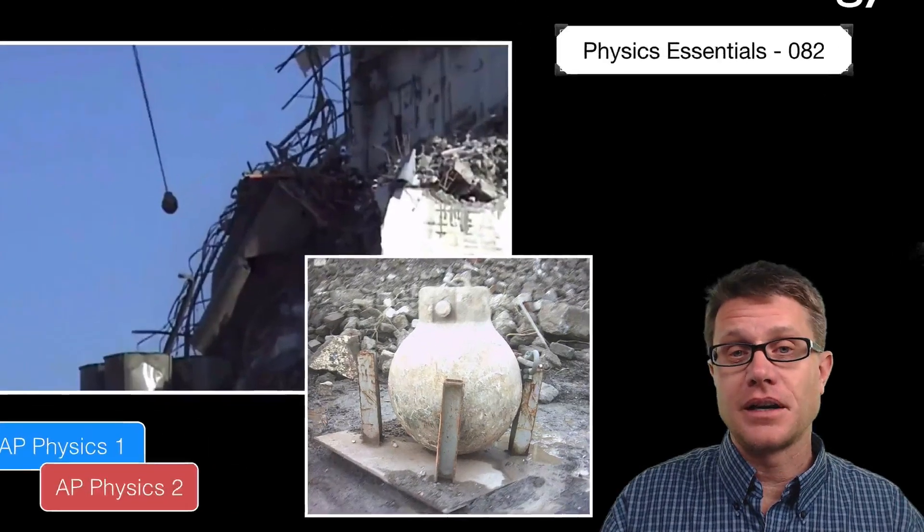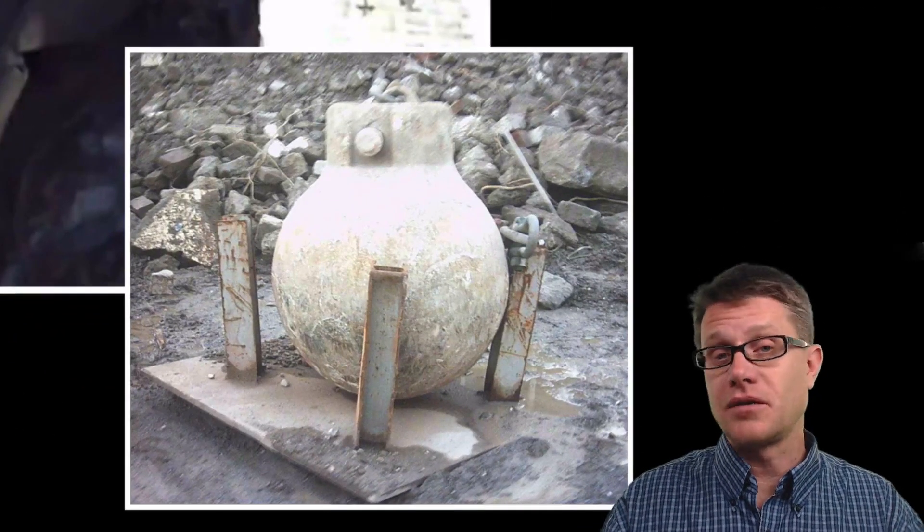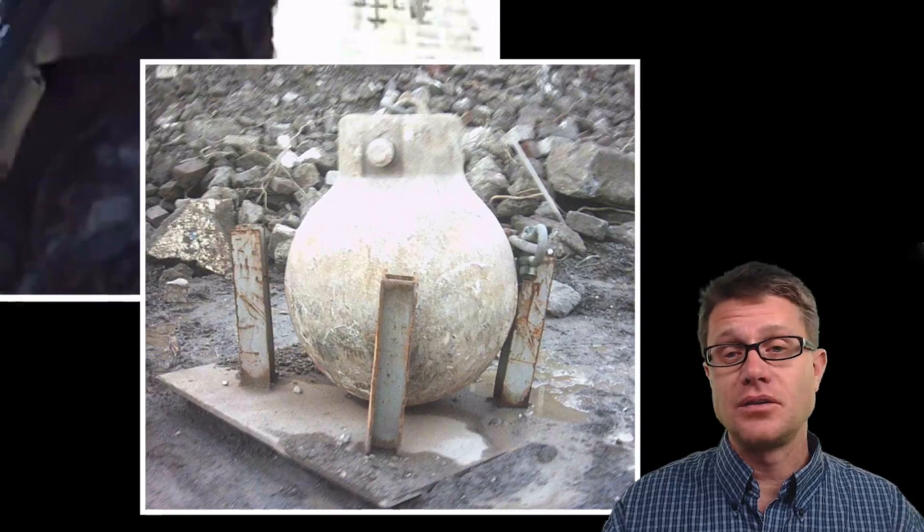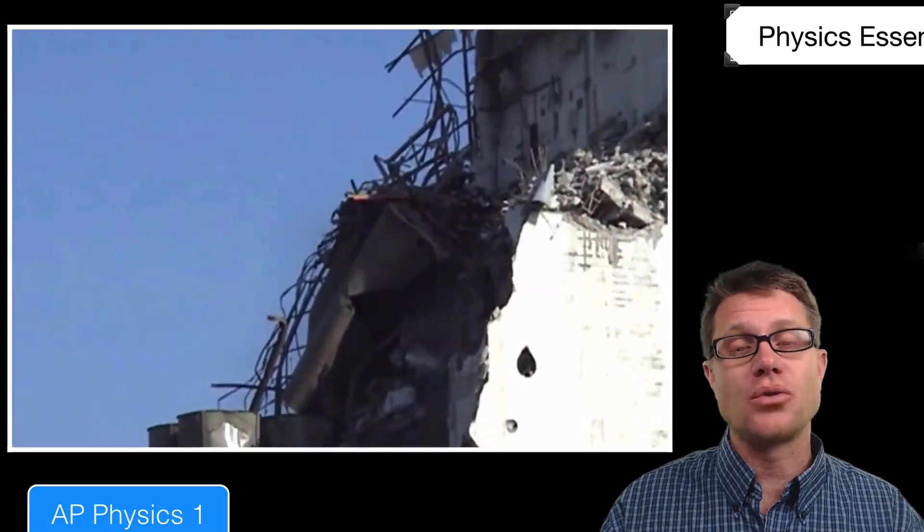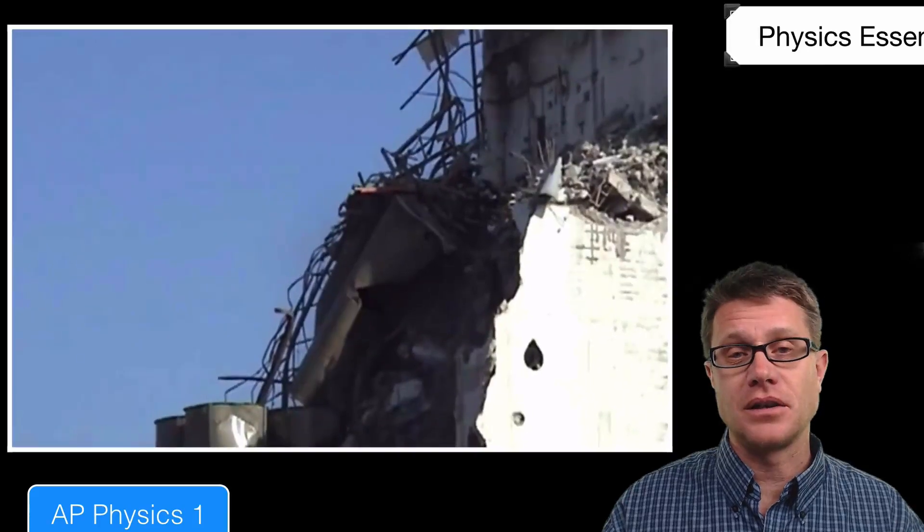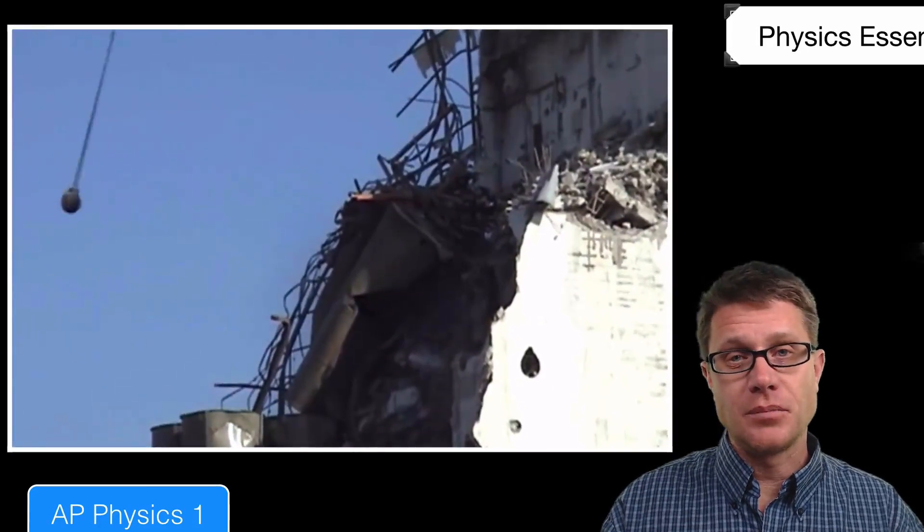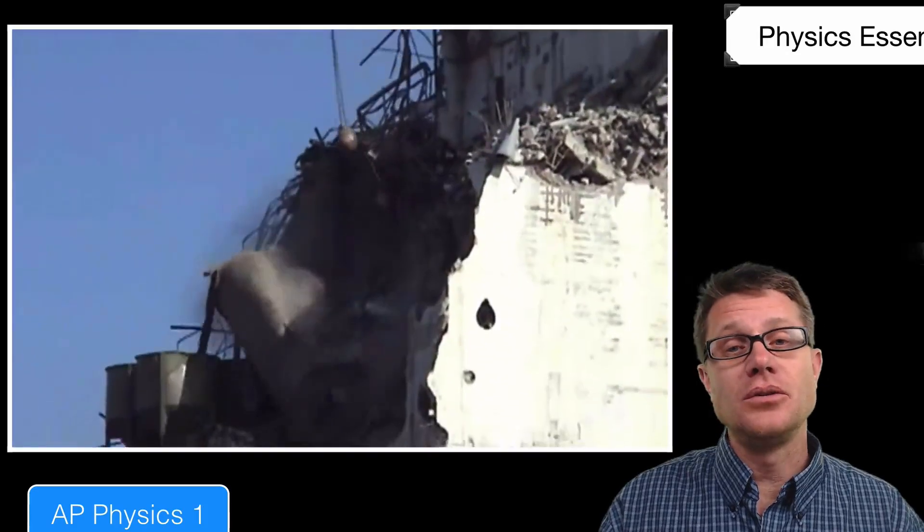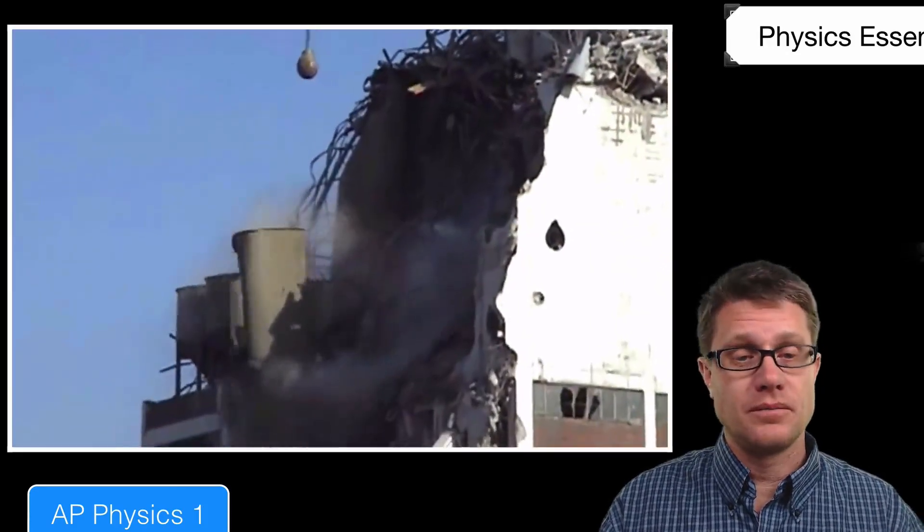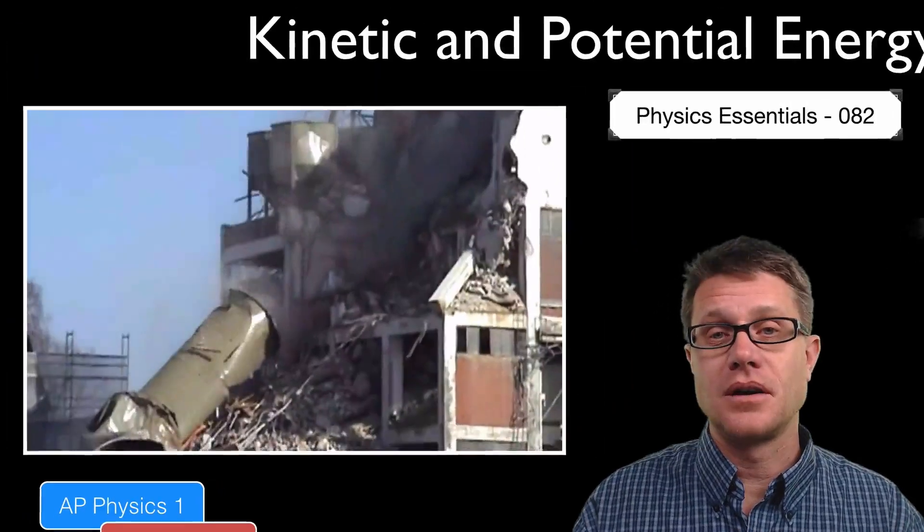If you take a wrecking ball like this, a wrecking ball has a huge amount of mass. You can connect it to a big crane and as you move that crane back you are storing some of that gravitational potential energy. When we release it by moving the crane it has a huge amount of kinetic energy. We can use that kinetic energy to do work. In this case we are breaking down the building.